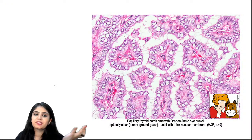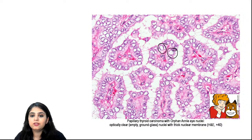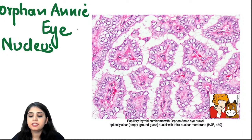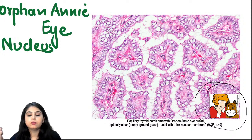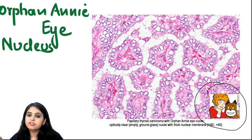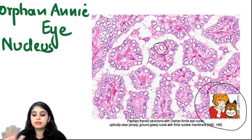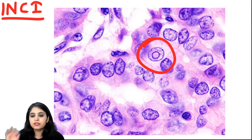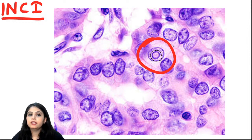On zooming in, you see the classic nuclear features. The nuclei are completely empty - called optically clear or Orphan Annie eye nuclei, named after the cartoon character whose eyes were drawn empty. You can also find intranuclear cytoplasmic inclusions - cytoplasm that has moved into the empty nucleus. These are important diagnostic features of papillary carcinoma thyroid; this appeared in the NEET PG 2020 exam.